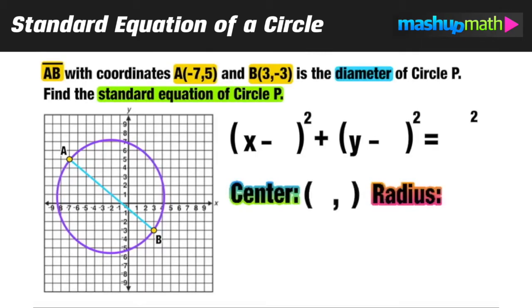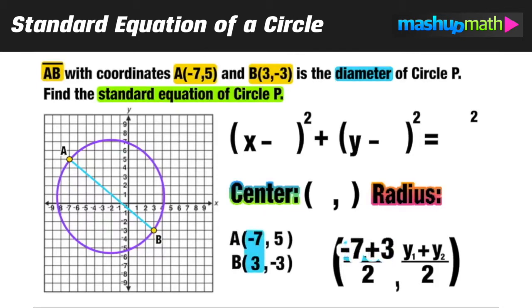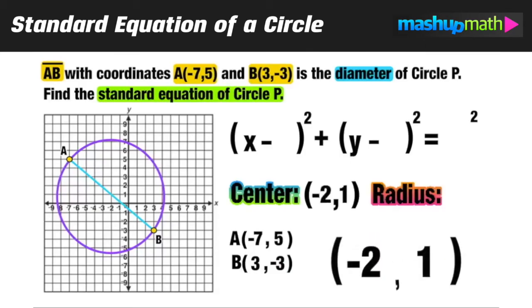So we're going to use the midpoint formula to find the location of the center of circle P. We take the coordinates of points A and B and substitute the corresponding values into the midpoint formula for x1, x2, and y1, y2. Negative 7 plus 3 equals negative 4, 5 plus negative 3 equals positive 2, then just cut those values in half to get the coordinates of the center of circle P at (-2,1).